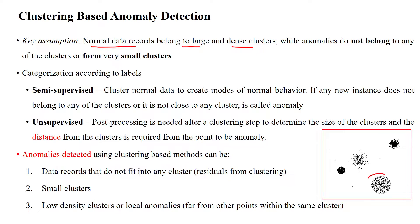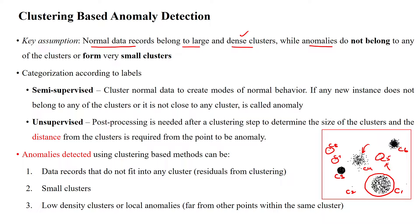For example, we have cluster 1, cluster 2, cluster 3, cluster 4, cluster 5 — which has three data points — cluster 6, cluster 7 with a single data point, and cluster 8 with a single data point. The normal clusters will have more data points and also be dense clusters. The dense clusters will have normal data points, while anomalies will have single data points. A small cluster will be called an anomaly, and a single data point is also called an anomaly.